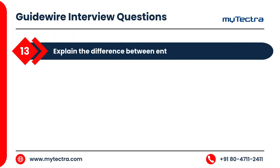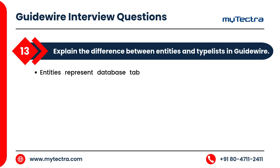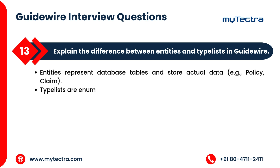Explain the difference between entities and type lists in Guidewire. Entities represent database tables and store actual data — for example, policy or claim. Type lists are enumerations that define fixed values — for example, claim status: open or closed.